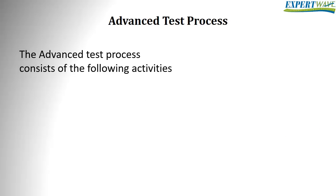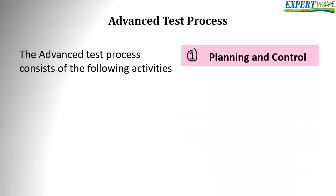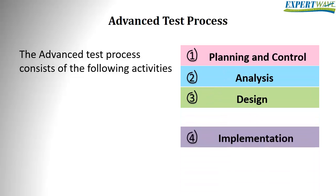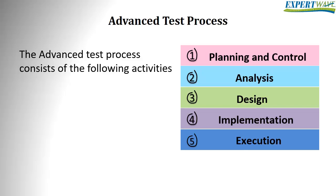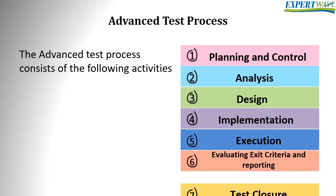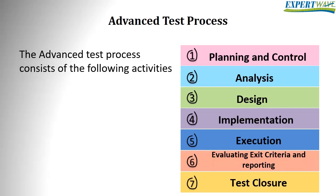For the advanced-level syllabus, some of these activities are considered separately in order to provide additional refinement and optimization of the processes, better fit with the software development lifecycle, and to facilitate effective test monitoring and control. The activities are now: planning, monitoring and control, analysis, design, implementation, execution, evaluating exit criteria and reporting, and finally test closure activities.